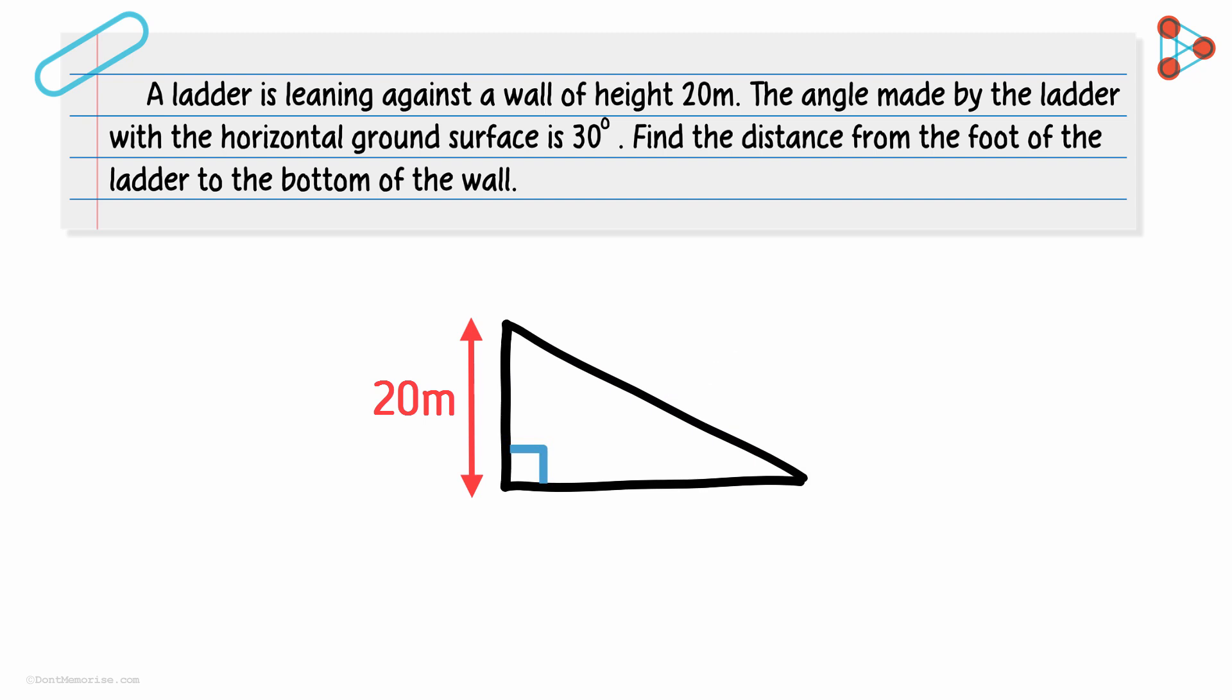What else are we given? We are told that the angle made by the ladder with the surface is 30 degrees. That is, this angle is 30 degrees. And finally, we are asked to find this length, that is the distance between the foot of the ladder and the bottom of the wall.